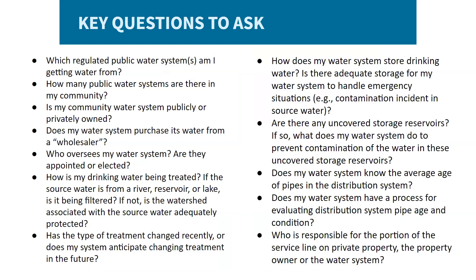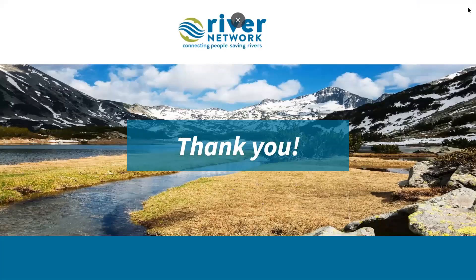The key questions to ask about your water system include: where does your water system draw its water from, who owns your water system and what oversight exists, what is the treatment process for your water, and how is your water stored. It's also important to consider how your water is distributed, including the age and quality of your pipes as well as ownership. For the full list of questions, you can look to the Drinking Water Guide. Thank you for tuning in — we hope this was a helpful overview of our drinking water guide.